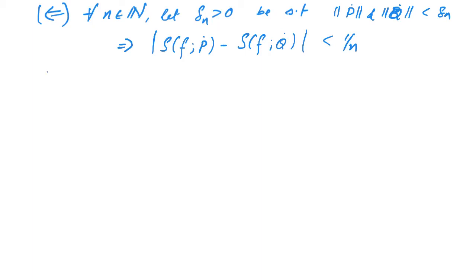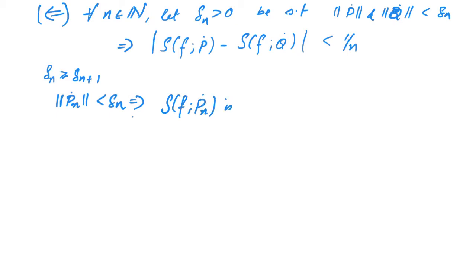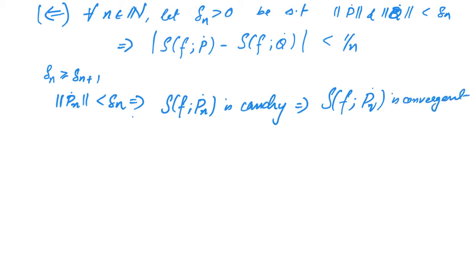We may assume that delta_n is a decreasing sequence, i.e., delta_n ≥ delta_{n+1}, because if one delta_n works then every smaller delta_n also works. Now if P_n-dot is a sequence of tagged partitions such that norm of P_n-dot is less than delta_n, then the Riemann sums S(f, P_n-dot) form a Cauchy sequence, which implies S(f, P_n-dot) is convergent. Let A equal the limit as n tends to infinity of S(f, P_n-dot).